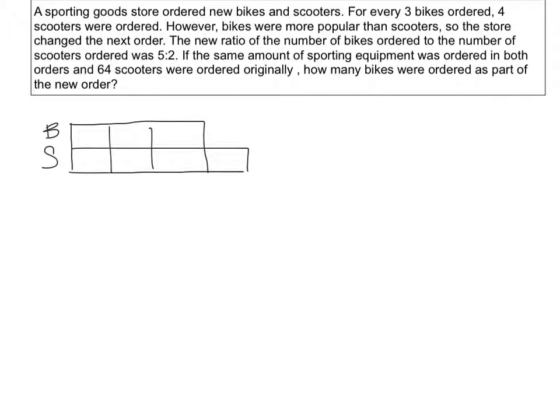Every 3 bikes, 4 scooters was ordered, so the ratio is 3 to 4. We were also told that originally there were 64 scooters ordered.